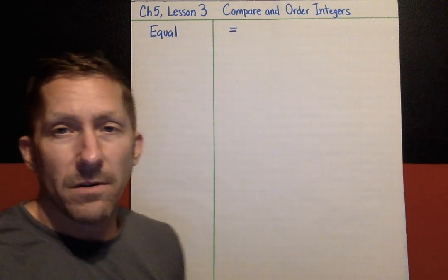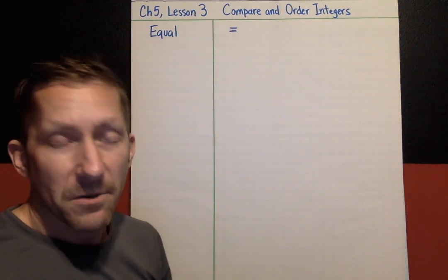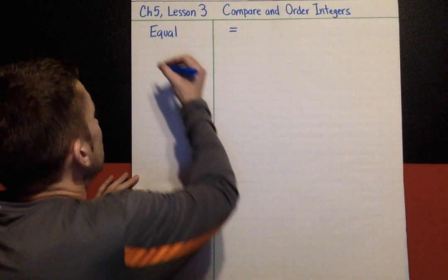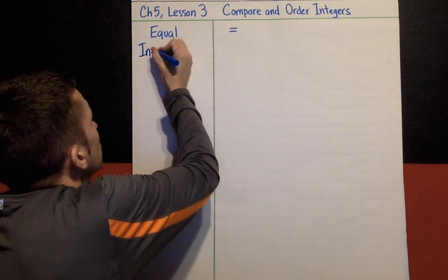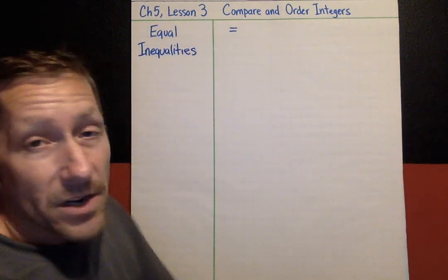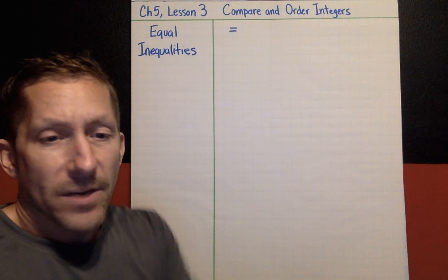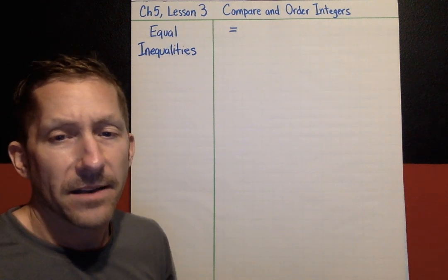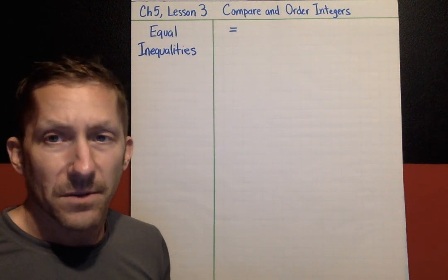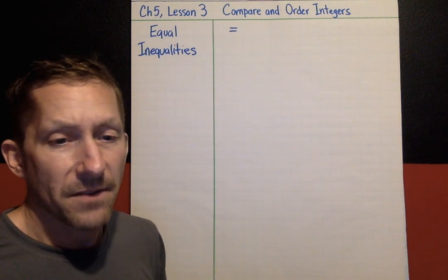When you're comparing two things, if they're equal you put the equal sign in between them, letting your reader know that these two quantities are equal. Today we're going to use inequalities. Most kids think inequalities are just things that are not equal, but from now on I want you to think of these two specific symbols. We'll learn more inequalities later, but here are two types.